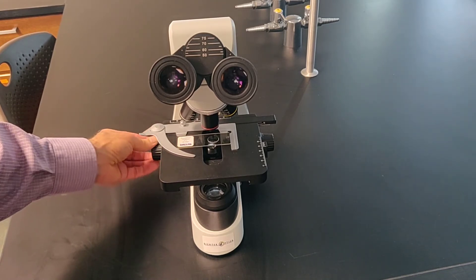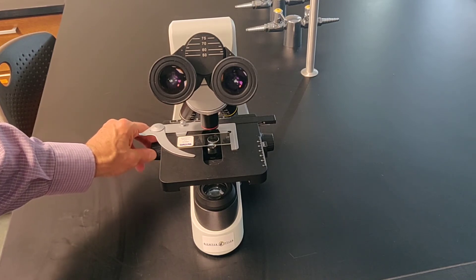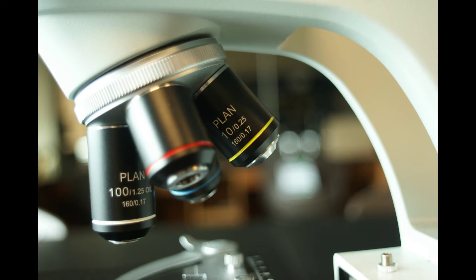The only time to use the coarse focus knob is with the lowest power scanning lens. With the other lenses, they can easily be damaged by moving the stage too high. Use only the fine focus knob at any magnification greater than 4x.